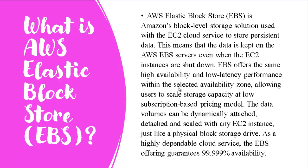Inside block-level storage, we have AWS Elastic Block Store (EBS). AWS Elastic Block Store EBS is Amazon's block-level storage solution used with the EC2 cloud service to store persistent data. This means the data is kept on AWS EBS servers even when the EC2 instances are shut down. EBS offers high availability and low latency performance within the same availability zone, allowing users to scale storage capacity at a low subscription-based pricing model. As a highly dependable cloud service, EBS offers 99.999% availability.